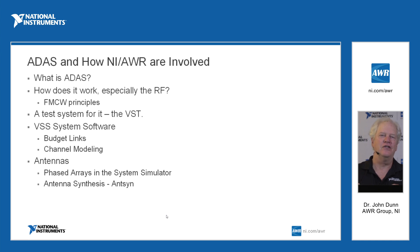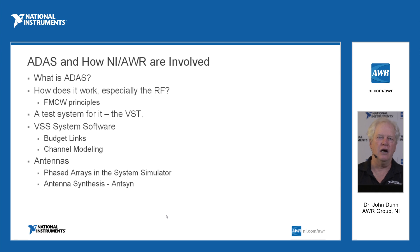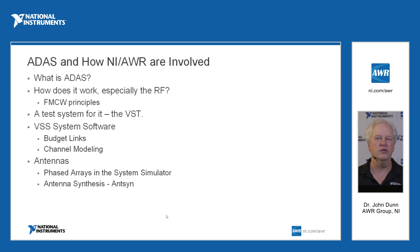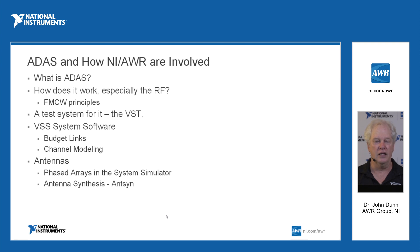ADAS is Advanced Driver Assisted Systems. Most people would call this automotive radar, though it actually encompasses more than just the radar system — it could also include guidance of the car, communications, etc. We will pretty much focus on radar here. What we are doing with radar on a car is essentially trying to detect objects around the vehicle, the speed of those objects, and then avoid collision with those objects. That is the essence of the hope of ADAS.